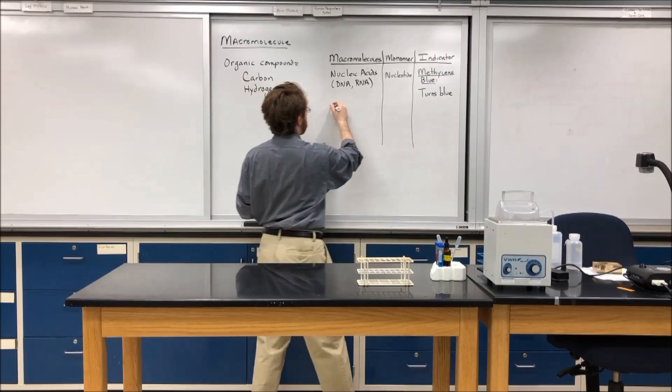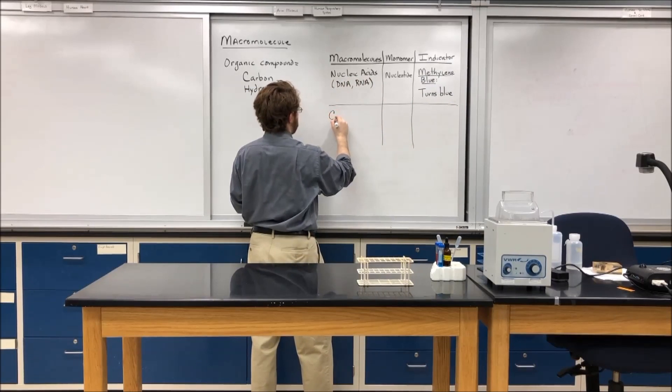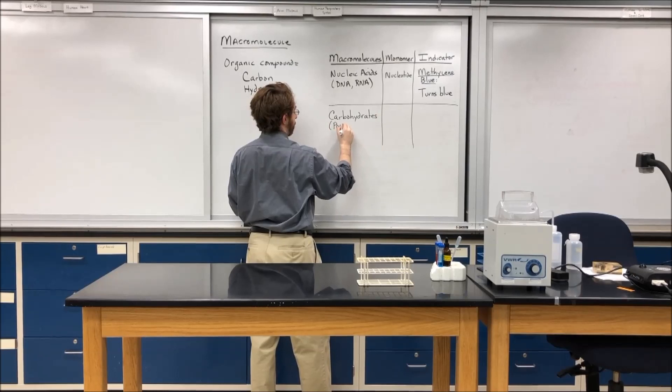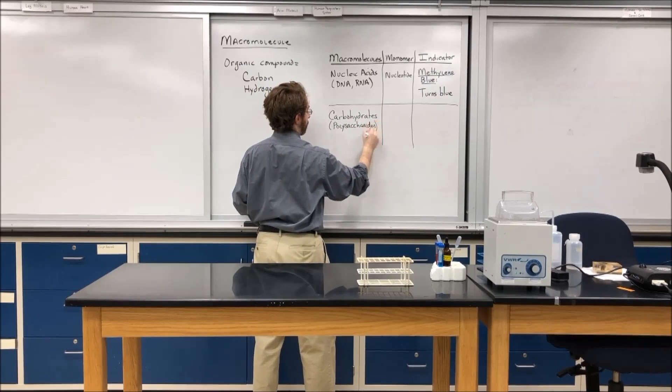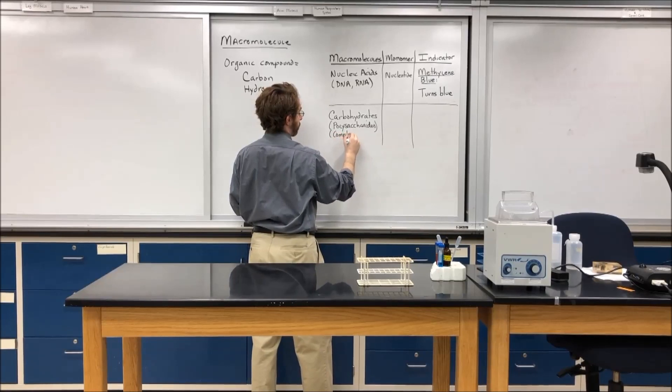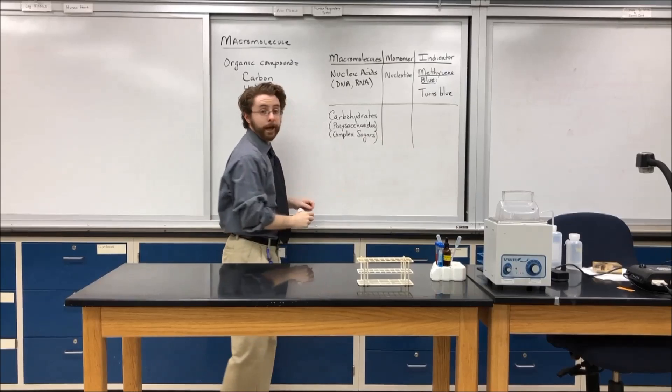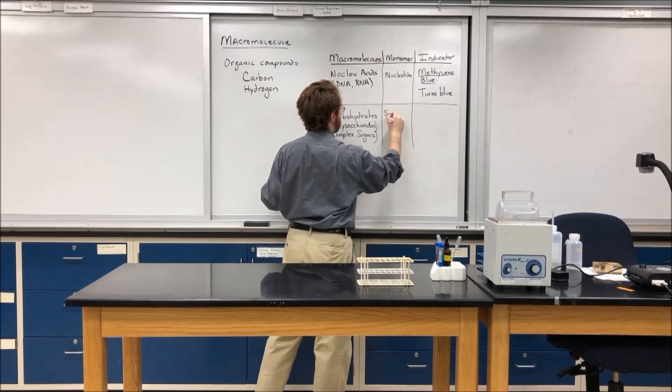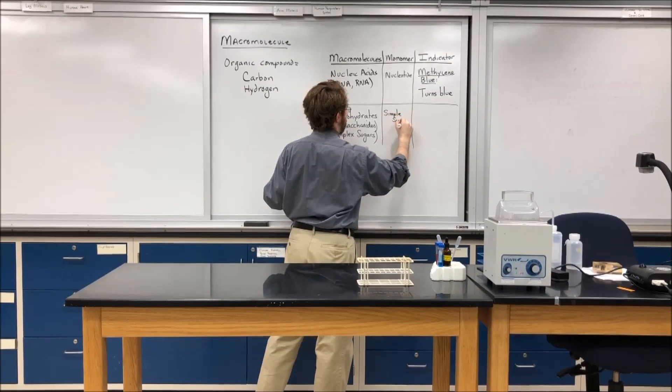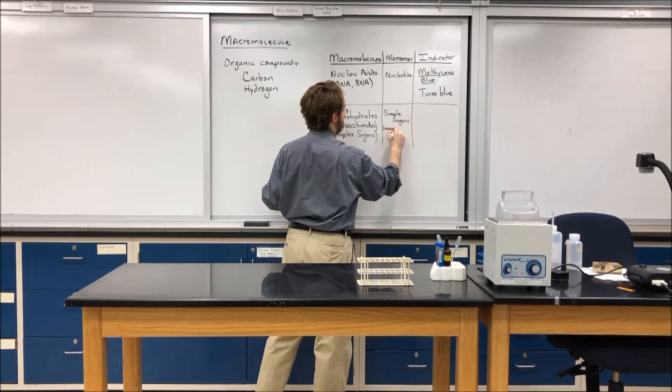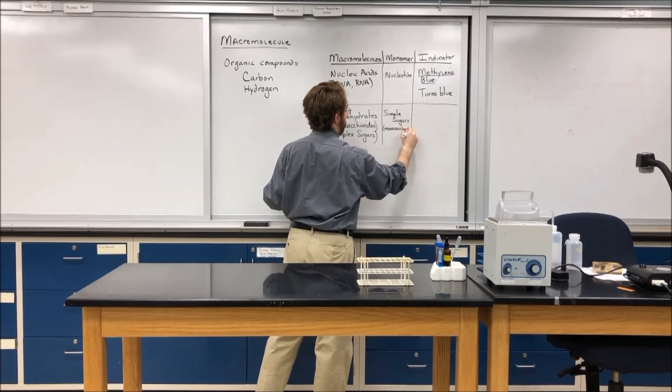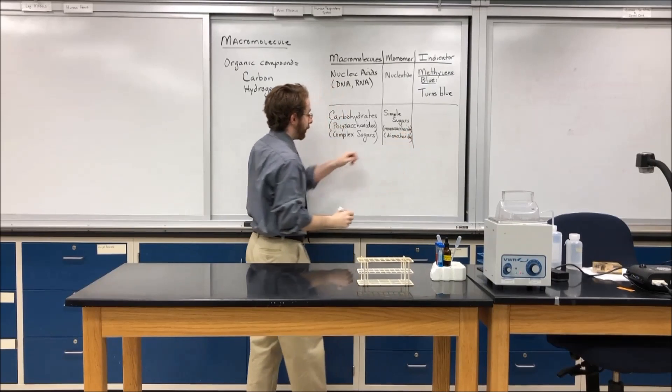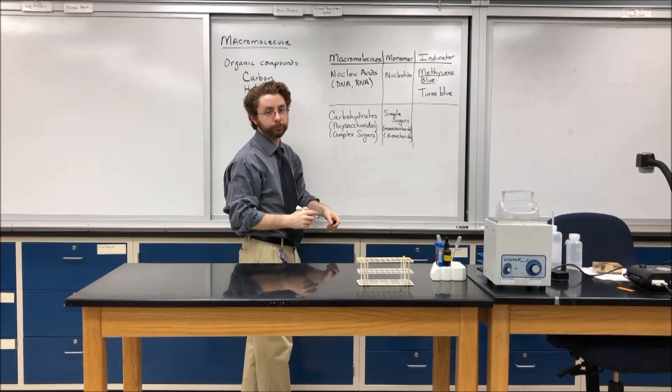The fourth and final macromolecule is the carbohydrates, also known as polysaccharides, also known as complex sugars. And the monomer that makes up carbohydrates or polysaccharides or complex sugars are the simple sugars. And sometimes these simple sugars are also called monosaccharides or a disaccharide. Mono for having one carbon ring and disaccharide for having two carbon rings.